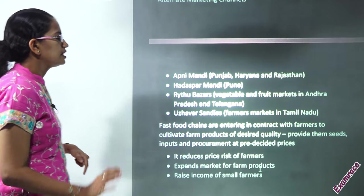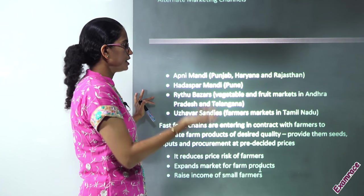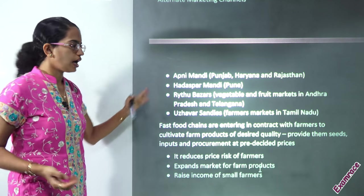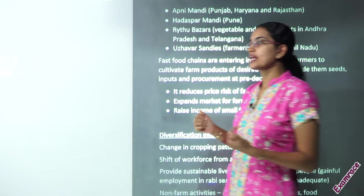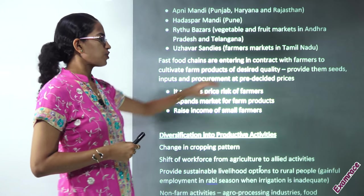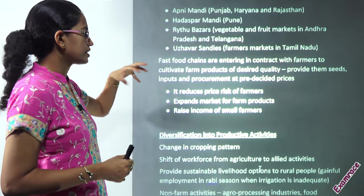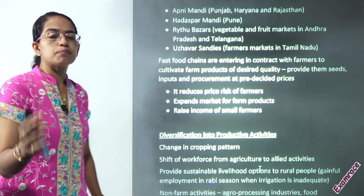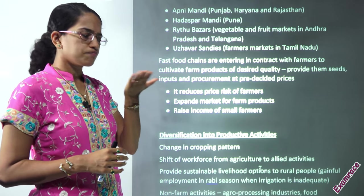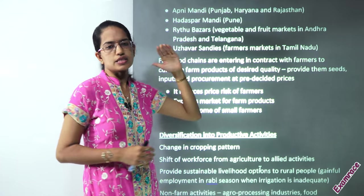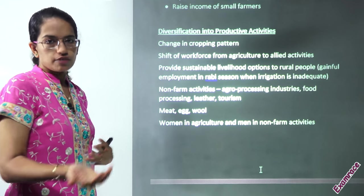The next is the alternate marketing channel. In various regions across India you have different names for alternate marketing channels — for example, Apni Mandi in Punjab, Haryana, Rajasthan, and Hadapsar Mandi in Pune. Fast food chains that are coming up are bringing a good thrust for the rural area. In the rural area they require a kind of desired quality of product, so they provide the farmers with good seeds, good inputs, and procurement at a pre-decided price. This reduces the risk for the farmer, gives more sustainable income, and increases the income level of farmers.